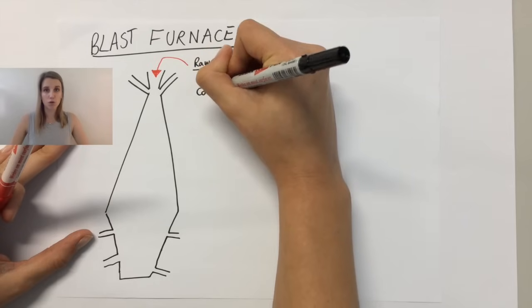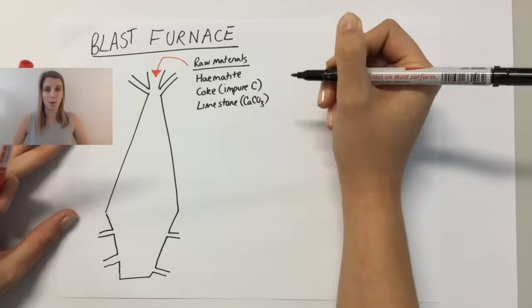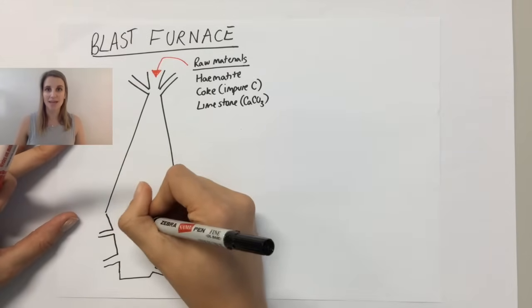Coke, which is just impure carbon or charcoal, and some limestone as well, calcium carbonate. All of these will be explained a little bit later.